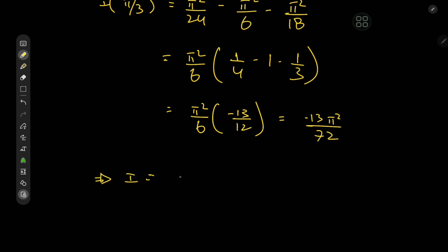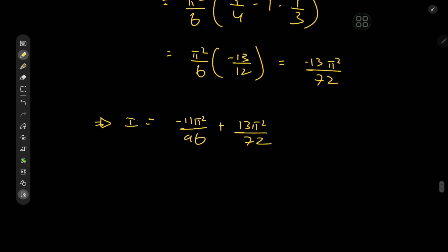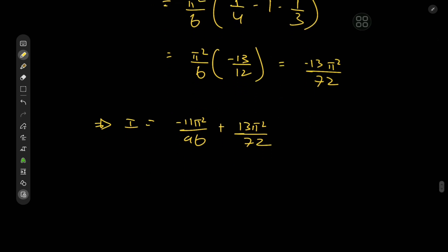The target integral equals I(π/4) minus I(π/3), that is negative 11π²/96 plus 13π²/72. Using a calculator: negative 11/96 plus 13/72 gives a positive value. So the target integral equals 19π²/288.